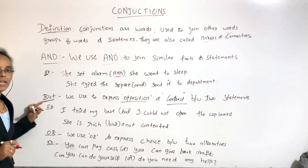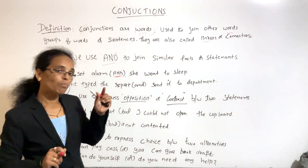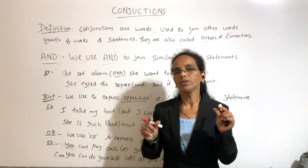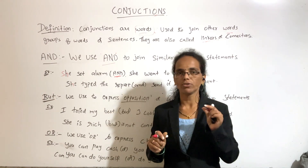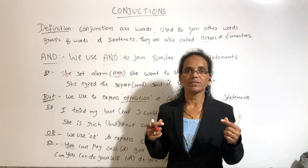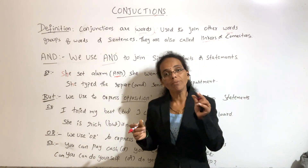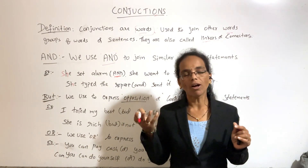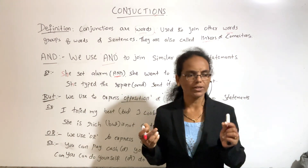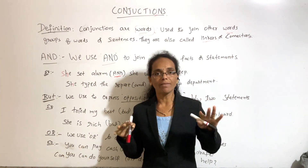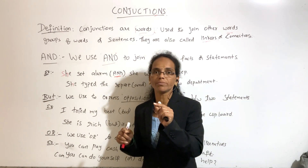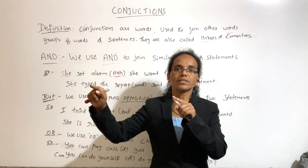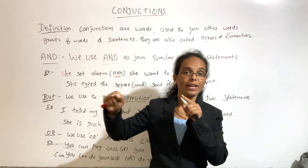Next we go to BUT. If one statement is positive and one is negative, we use BUT. For example: I tried my level best BUT I could not succeed. 'I tried my level best' is a positive statement, BUT 'I could not succeed' is negative.